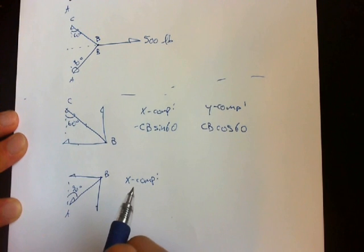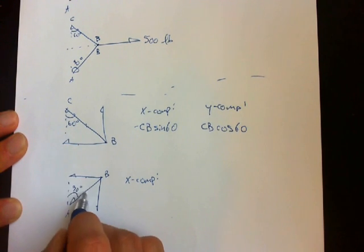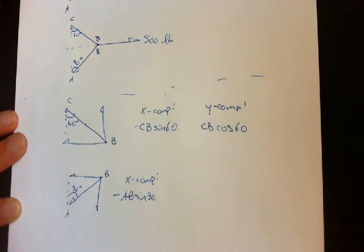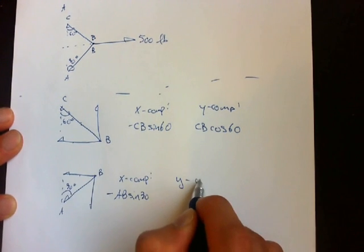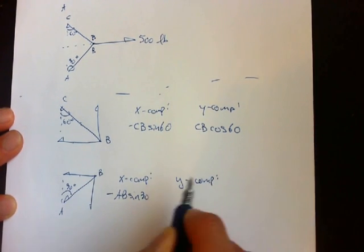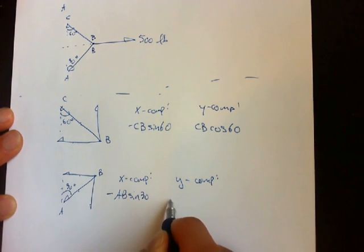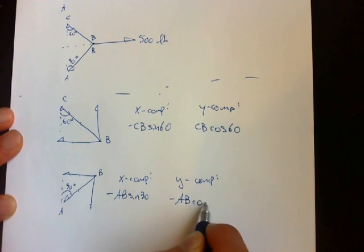The X component is opposite over hypotenuse, so negative AB sine 30. The Y component is adjacent over hypotenuse, so it's negative AB cosine 30.